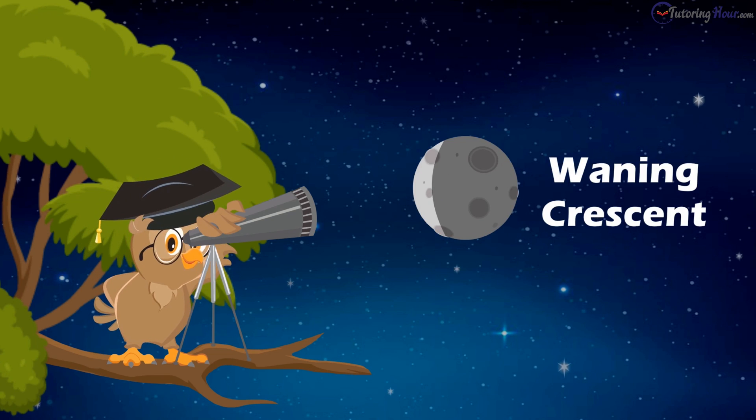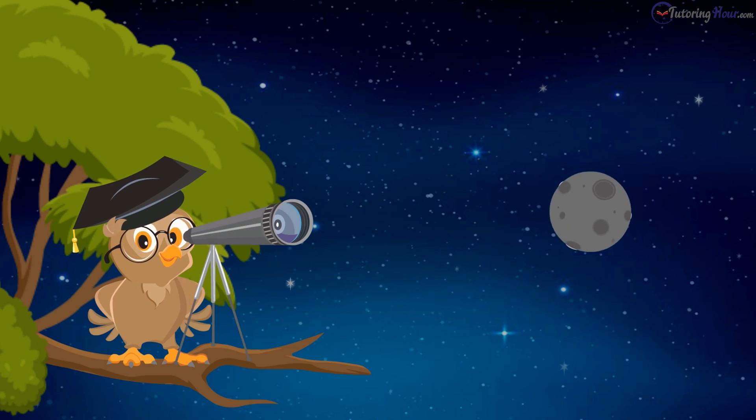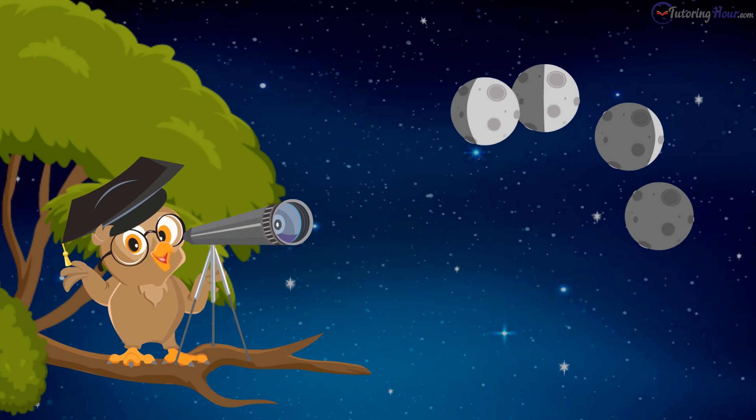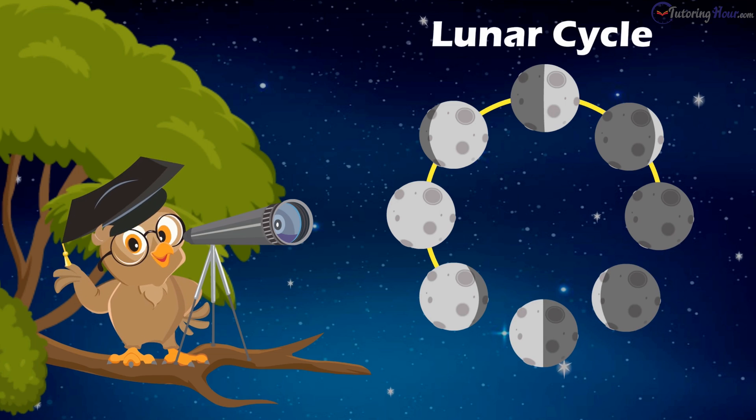until it appears like a thin crescent again, before finally vanishing for a few days. The growing and shrinking cycle of the moon is repeated every month, and is called the lunar cycle.